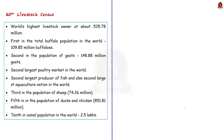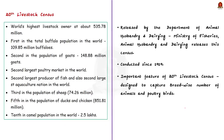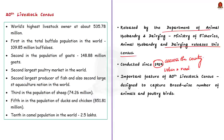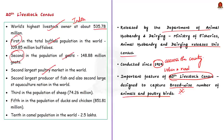The Department of Animal Husbandry and Dairying, under the Ministry of Fisheries, Animal Husbandry and Dairying, releases the Livestock Census, conducted periodically since 1919. The 20th Livestock Census has been designed to capture breed-wise numbers of animals and poultry birds. Based on this data, India is the world's highest livestock owner at about 535.78 million. It stands first in total buffalo population, second in population of goats, poultry and fish production, second in aquaculture, third in population of sheep, fifth in ducks and chicken, and tenth in camel population.